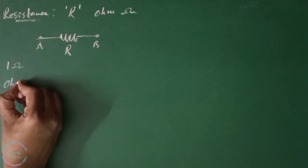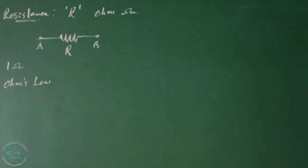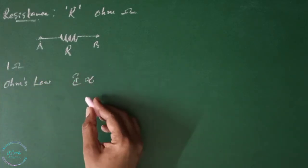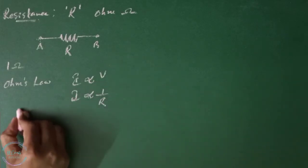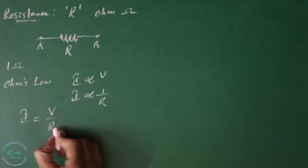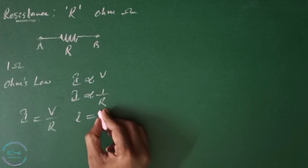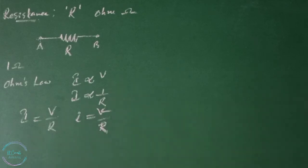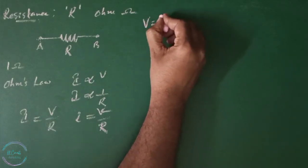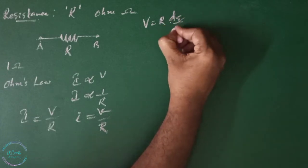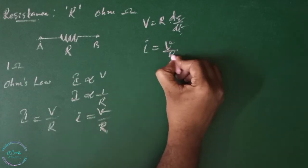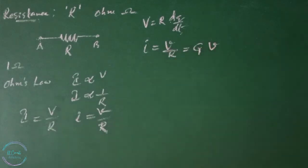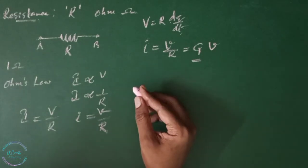According to Ohm's law, the current I is directly proportional to voltage V and I is inversely proportional to 1 by R. Then I equals V by R. For small values of currents and voltages, i equals v by R. If we write this equation in terms of charges, then V equals R dQ by dT, or I equals v by R G V, where G is the conductivity of the conductor.